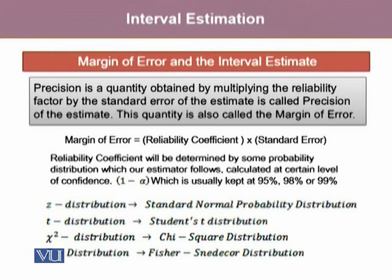Various probability distributions that we most commonly use and we will be using in our course are z-distribution, which is also known as the standard normal probability distribution, t-distribution, which is named after Student's t-distribution, chi-square distribution, and F-distribution, which is Fischer-Snedecor distribution.